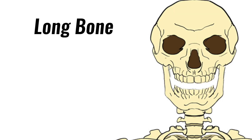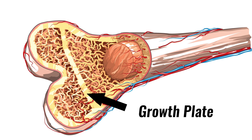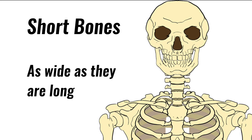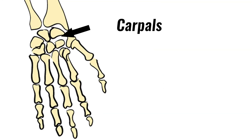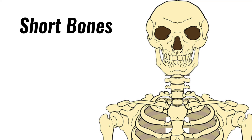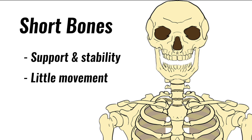To classify a bone as a long bone, it has to have a body that is longer than it is wide and growth plates at either end. Short bones are approximately as wide as they are long. For example the carpals in the wrist and tarsals in the foot. Their primary function is to provide support and stability whilst allowing only very little movement.